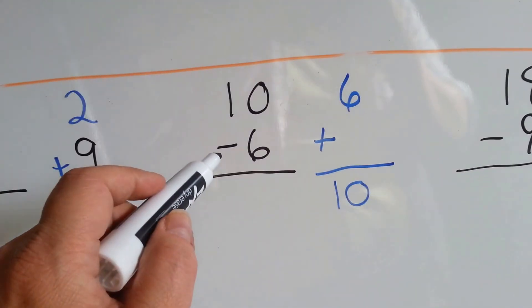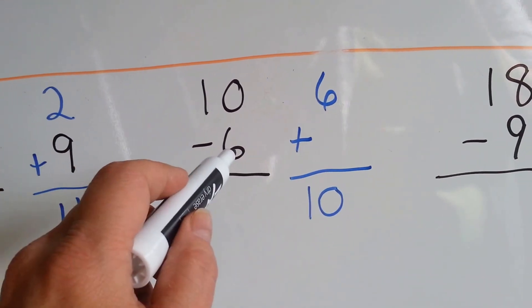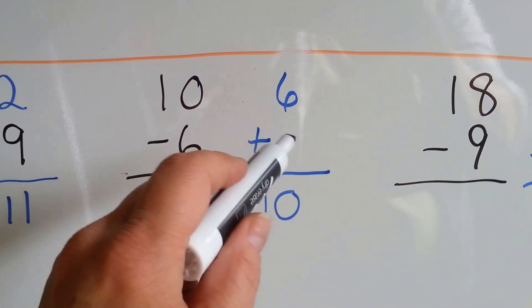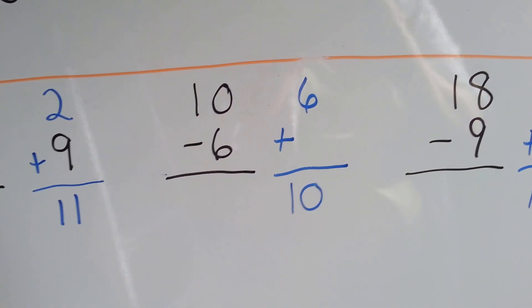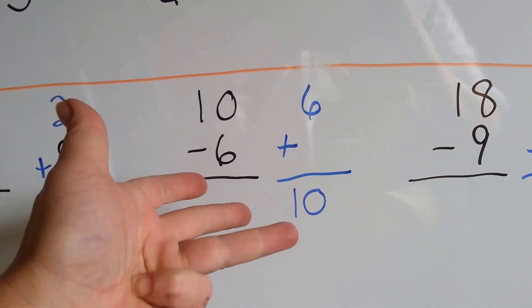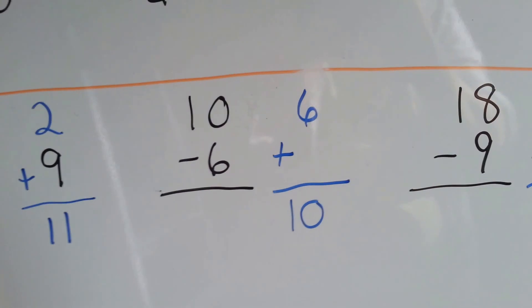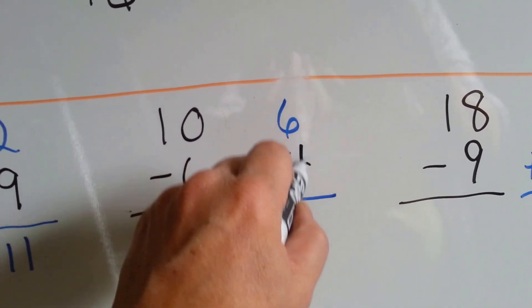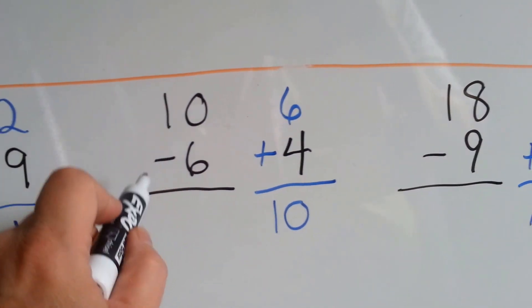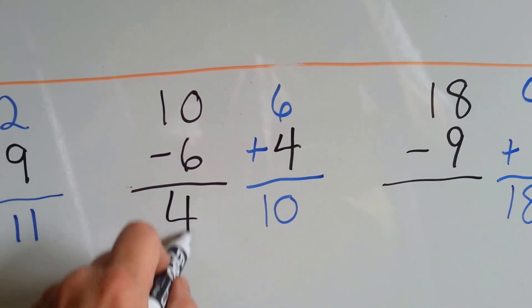How about this one? 10 take away 6. 6 plus something is equal to 10. 6, 7, 8, 9, 10. Four. 6 plus 4 is equal to 10. So, 10 take away 6 is 4.